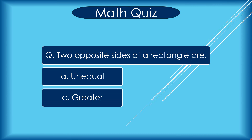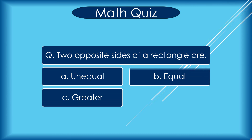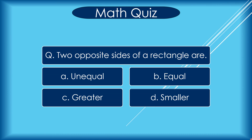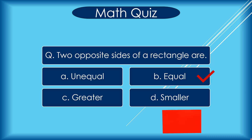Two opposite sides of a rectangle are: A unequal, B equal, C greater, D smaller. Correct answer is B equal.